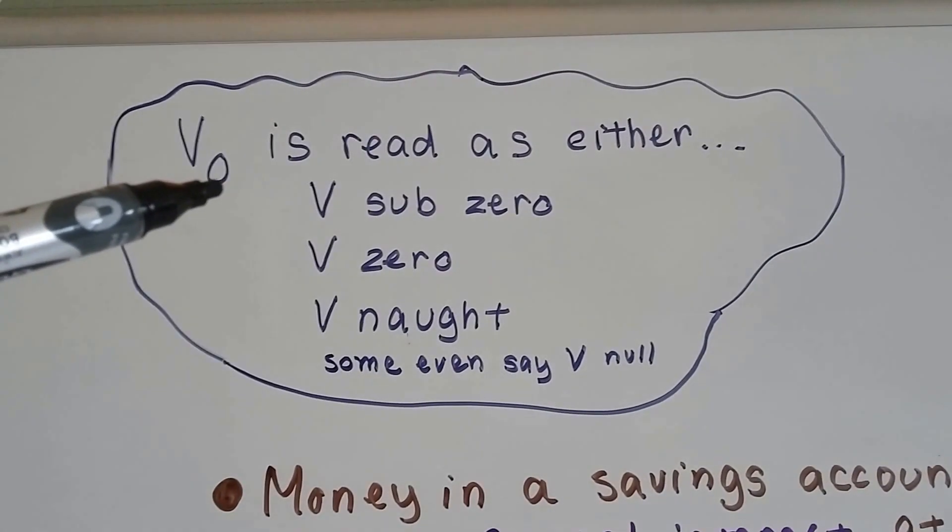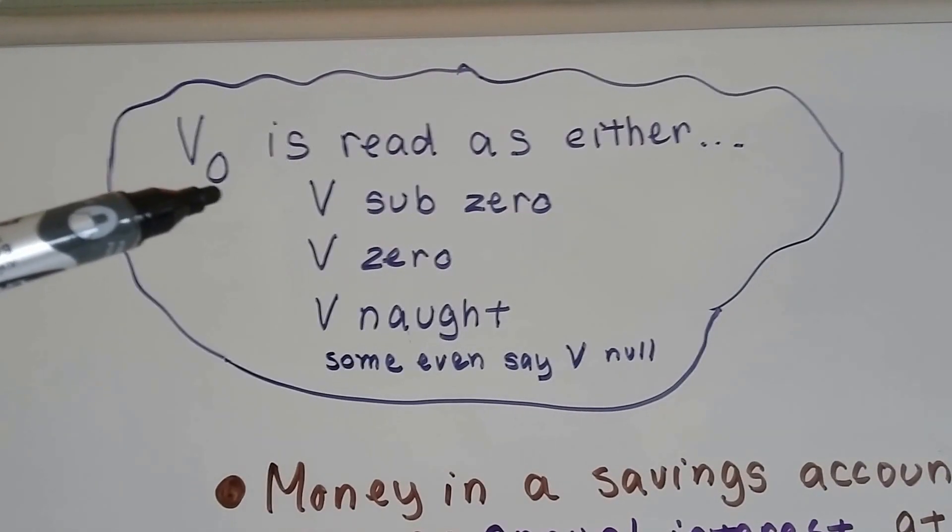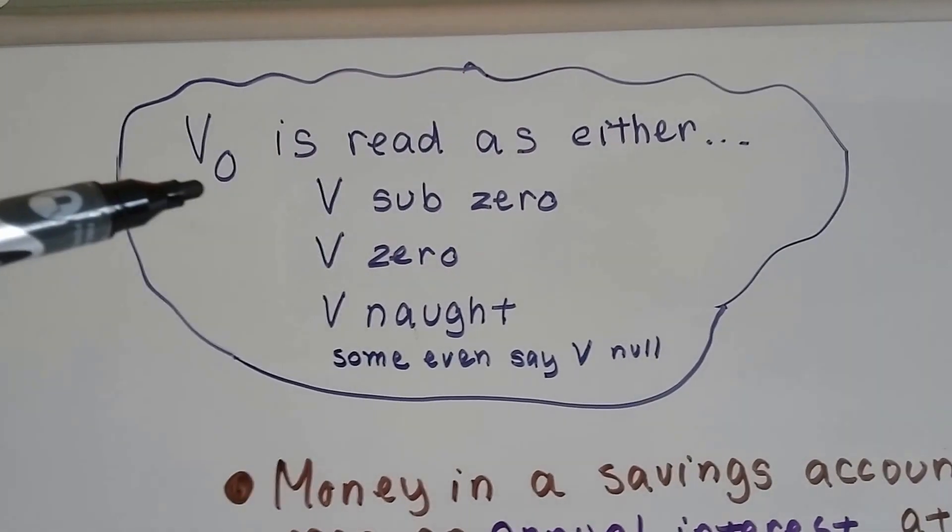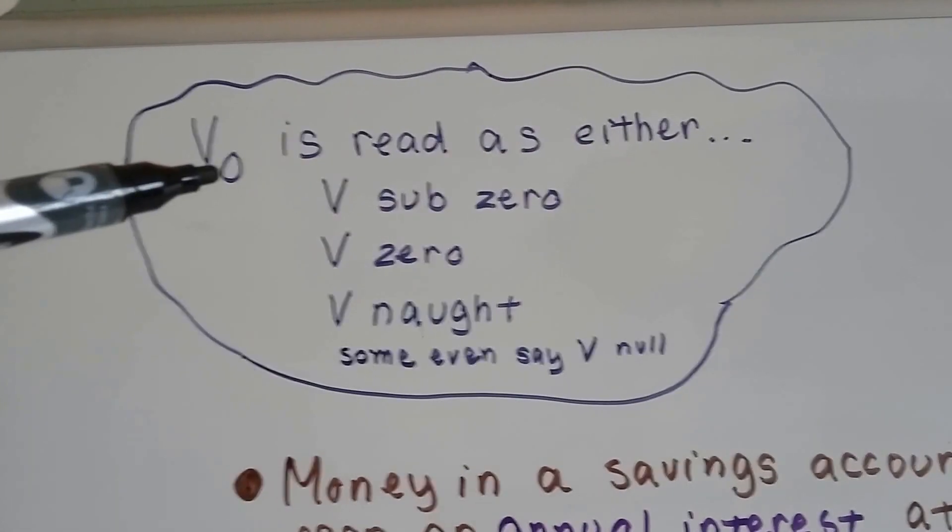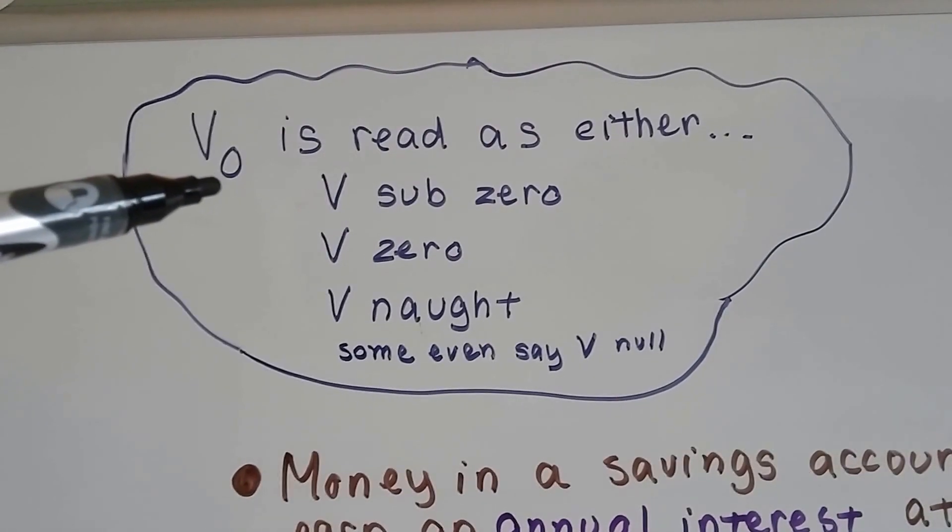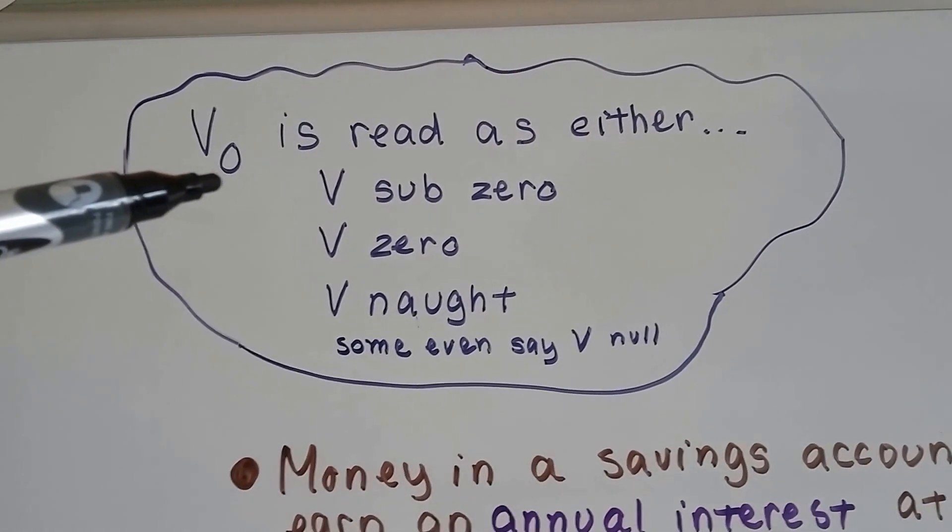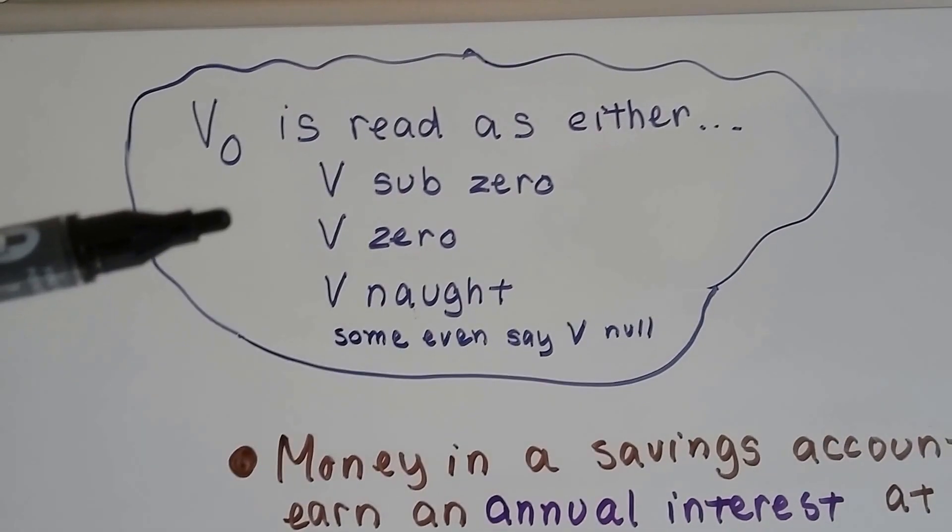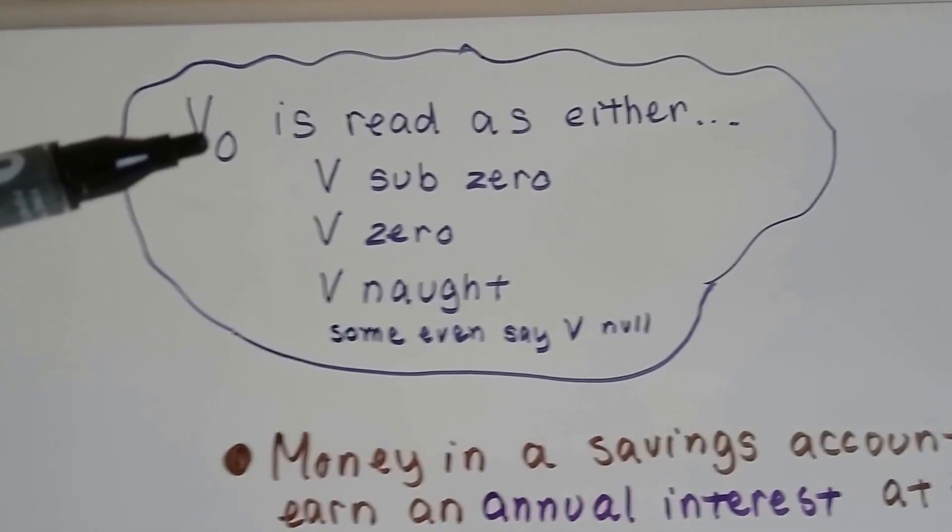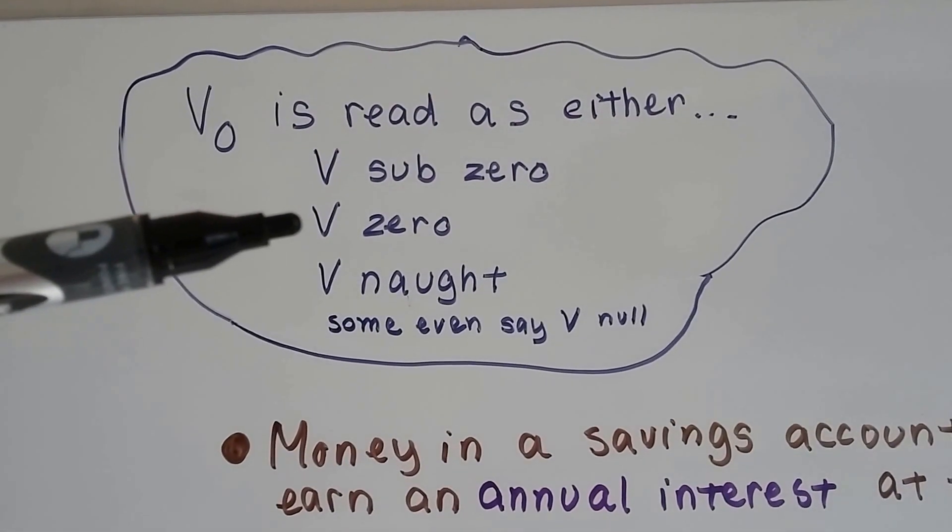When you see a v with a little zero down here, this is called a subscript. When you see a little number down here, it could be a v with a little one. It could be an a with a little one, or an x with a little one. This v with a little zero means the initial velocity. It's the initial speed when it's starting. You can read it either as v sub zero, because it's a subscript.